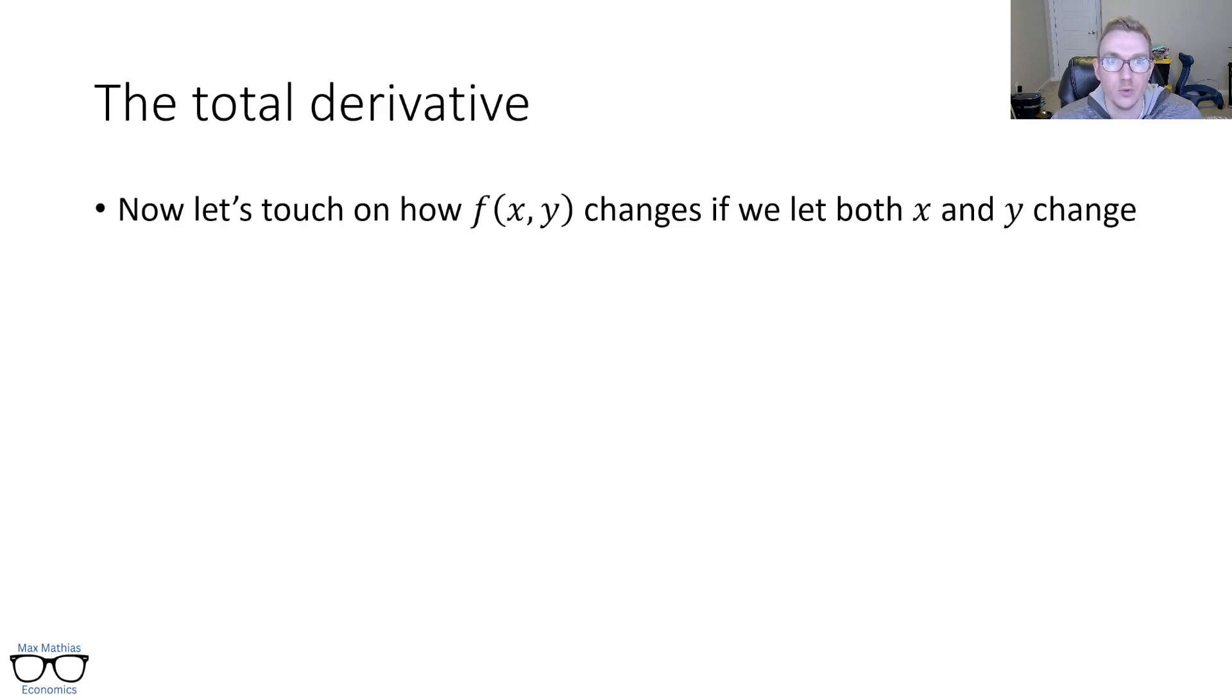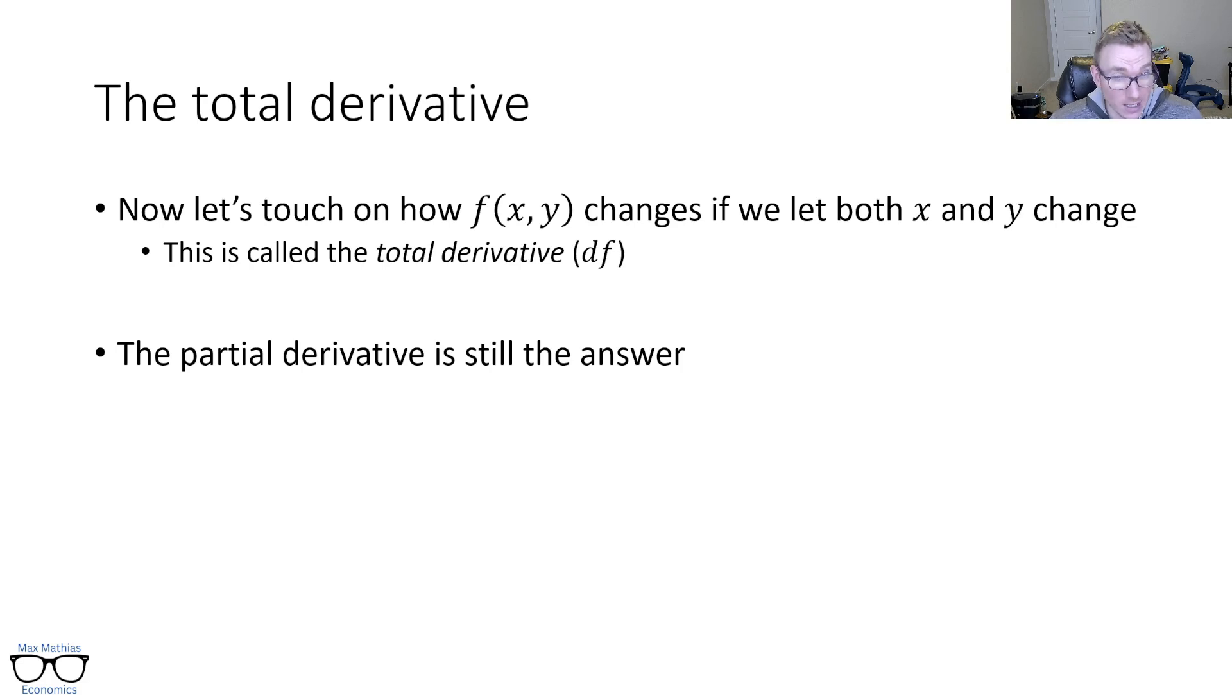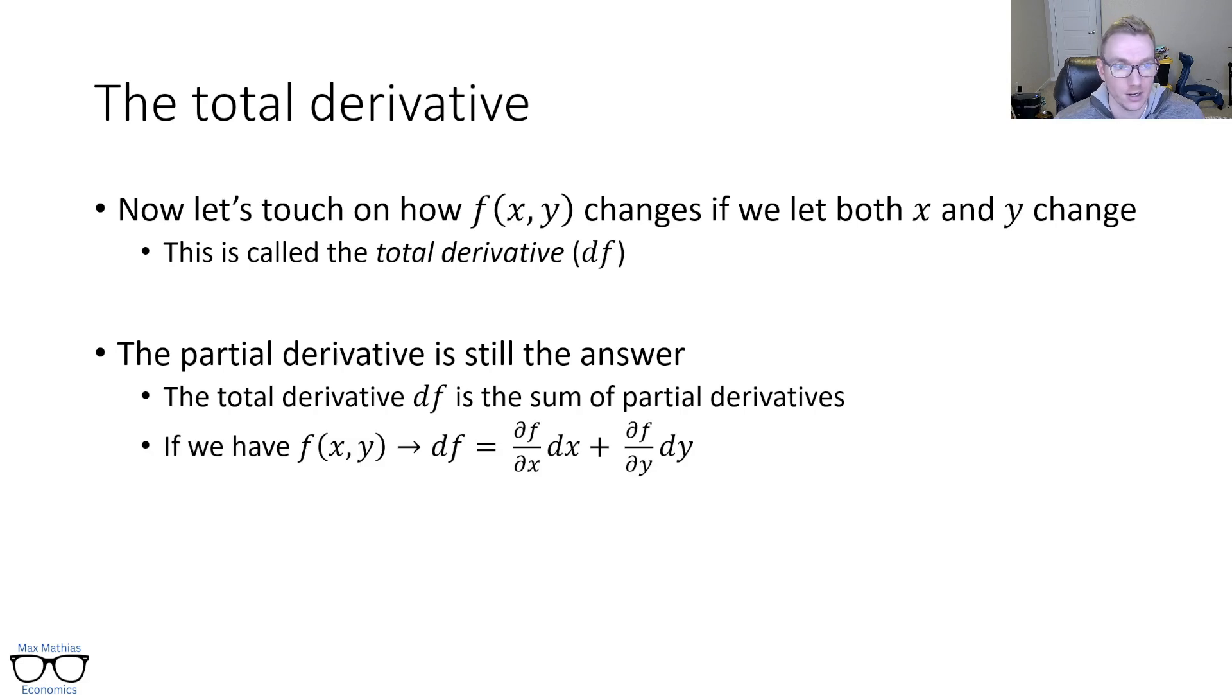So the total derivative. Now we're moving to that second question: how does this function change if we let both x and y change? This is called the total derivative. Now notice this is just df, there's no partial there. We're asking how does the entire thing change? The nice thing is the partial derivative is still the answer. The way this works, the total derivative df is simply just the sum of partial derivatives for any and all variables. So with f of x and y, there's going to be two partials. If it was x, y, z there would be three, and on and on. But if we have just some function f of x, y, then the total derivative is partial f partial x times dx plus partial f partial y times dy. So basically it's asking how does this function change as x changes, and then plus how does this function change as y changes as well. So pretty convenient there.